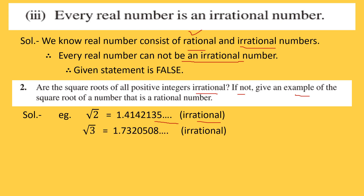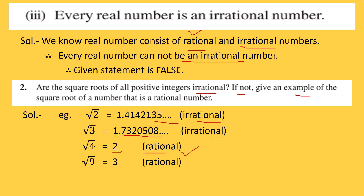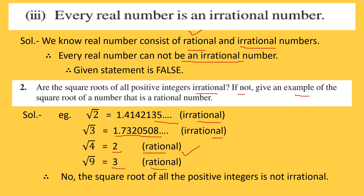Similarly, √3 = 1.7320508... — again non-terminating, so it is irrational. Now √4 = 2, and 2 is a rational number since we can write it as 2/1. Likewise, √9 = 3 and √16 = 4, both rational. So the answer is no — the square roots of all positive integers are not irrational. For some values, like perfect squares, we get rational numbers.